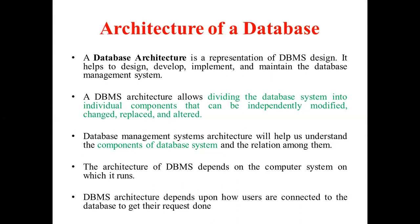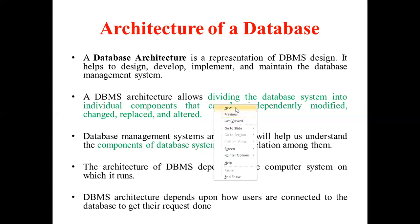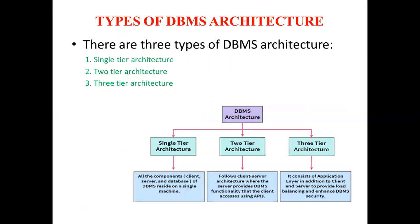The database management architecture helps us understand the different components of the database system and the interrelation between them. It depends on the computer system on which it will run and on how users are connected to the database to get their requests done. Since the DBMS is not always directly accessible by the user or an application, we can maintain it with various architectures. This architecture follows a tier-based classification — the DBMS architecture is classified depending on how many layers are present in the structure. Based on that, there are three types: single-tier, two-tier, and three-tier architecture.